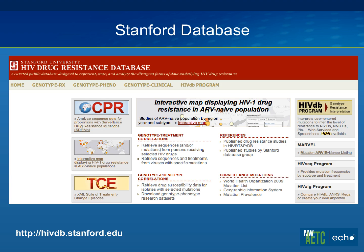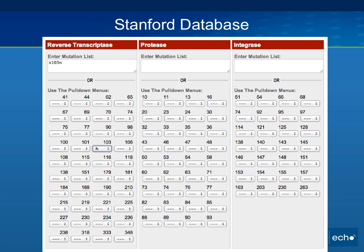I'm going to be referring again to the Stanford database. If you haven't used this, it's a very powerful tool, and I'd recommend you try it because you can learn a lot from it. This is the website at the bottom, and this is the home page. Once you get there, if you click the button in the upper right-hand corner — HIV Database Program — what that takes you to is a screen where you can plug in all the mutations from your genotype resistance test and get an interpretation.